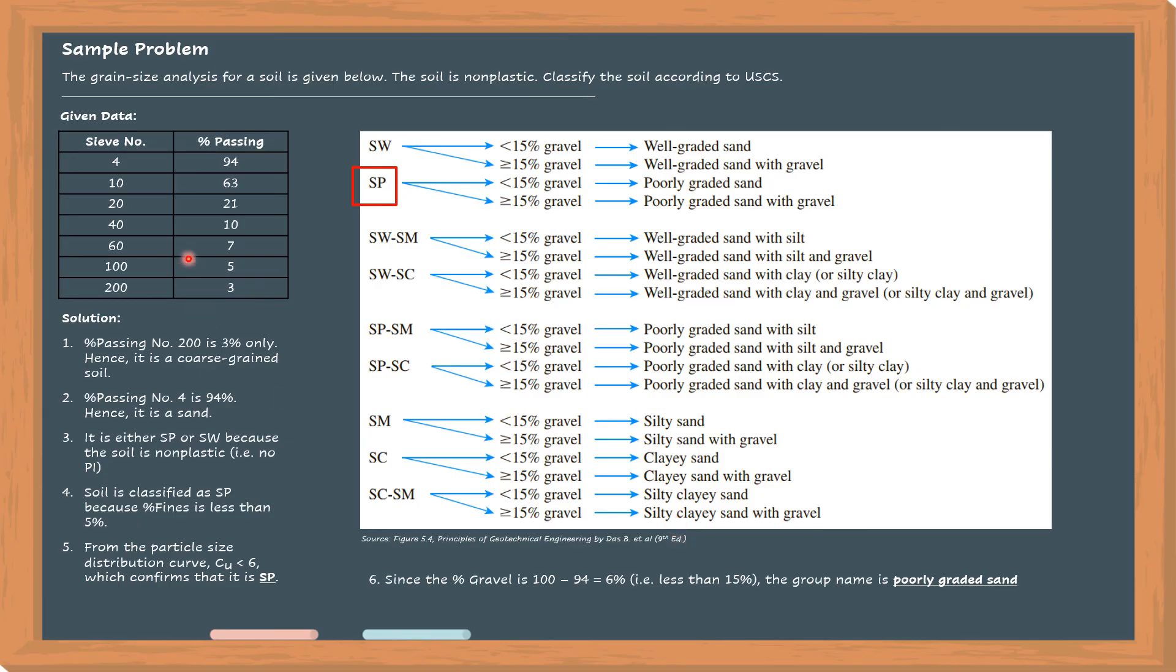Therefore, the USCS classification of this type of soil is SP, and the group name is poorly graded sand. Thank you.